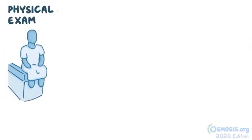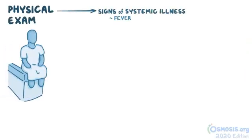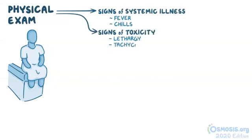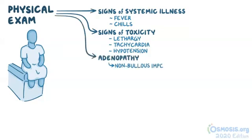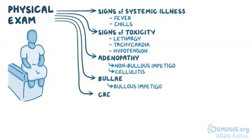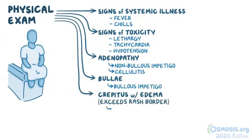On physical exam, there may be signs of systemic illness like fever and chills, and signs of toxicity like lethargy, tachycardia, and hypotension. Additionally, there may be adenopathy, which can occur in non-bullous impetigo and cellulitis, and bullae, which can be seen in bullous impetigo.